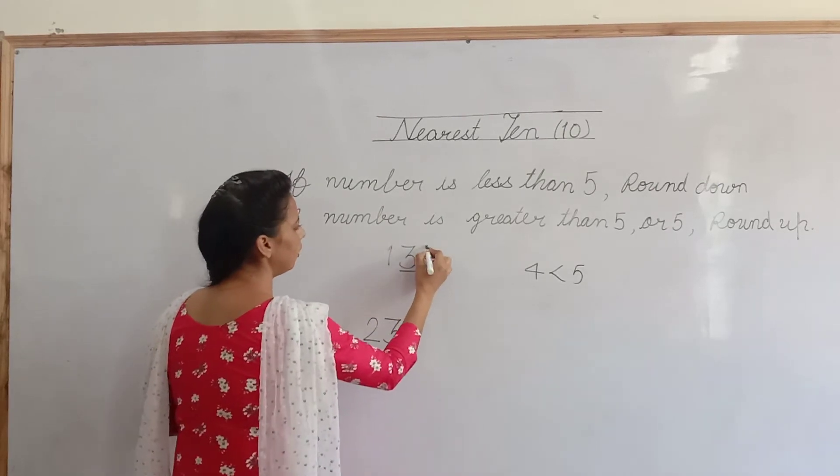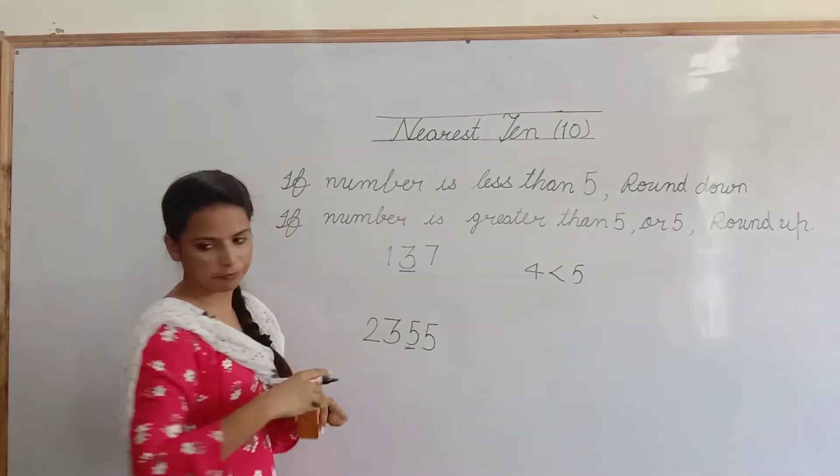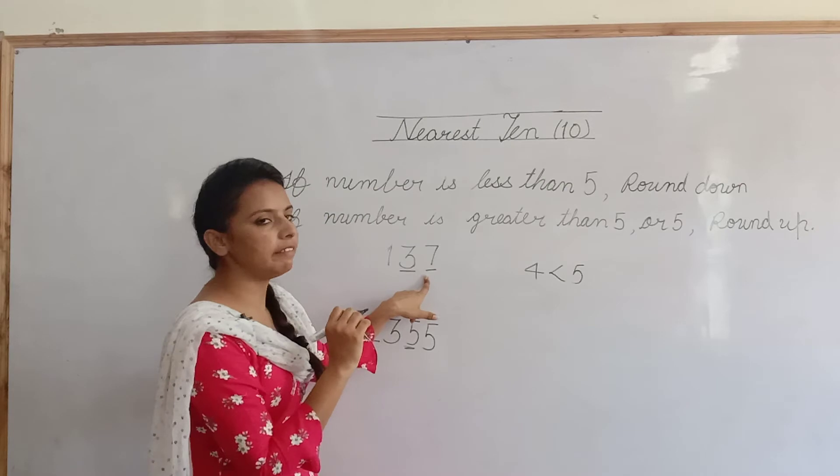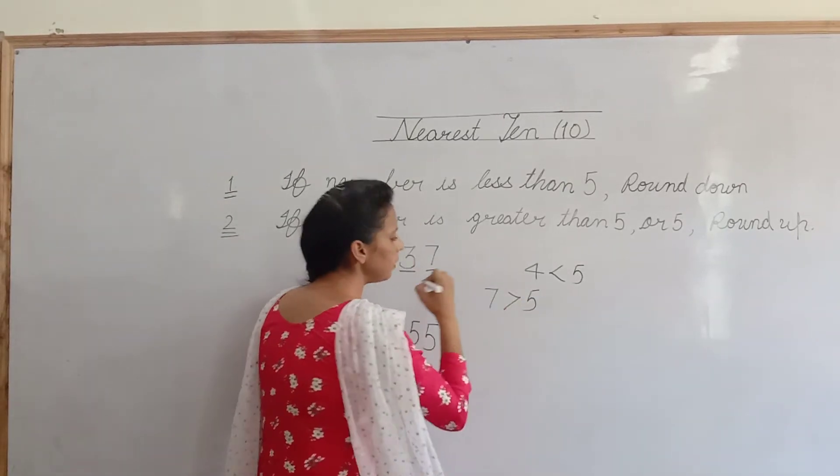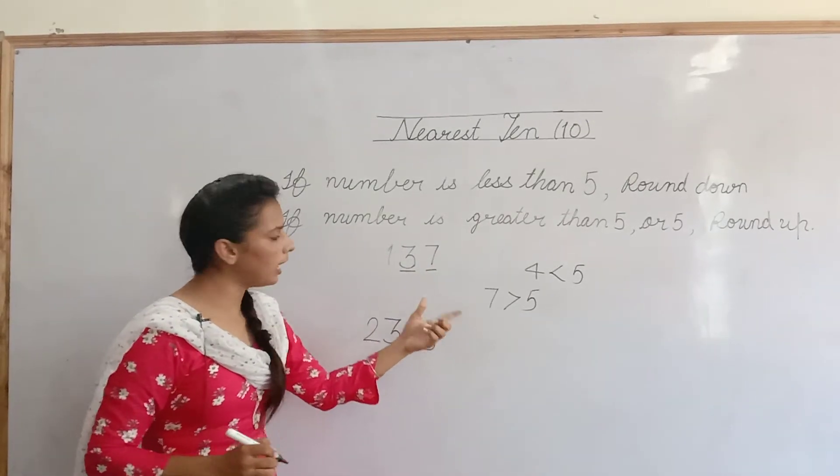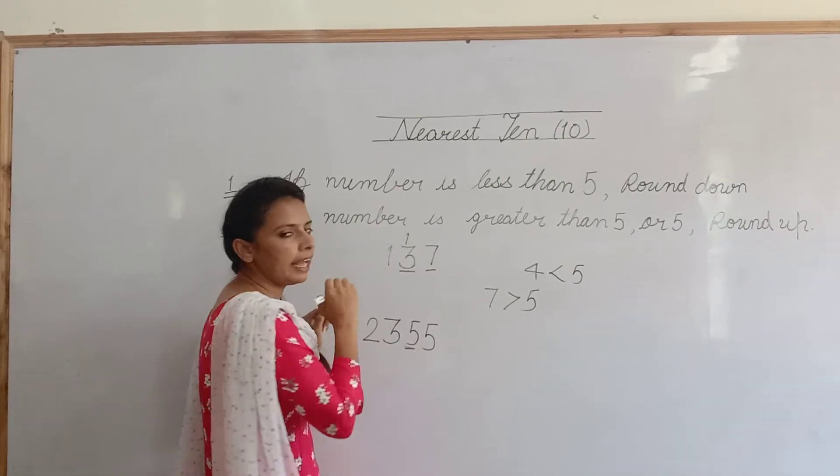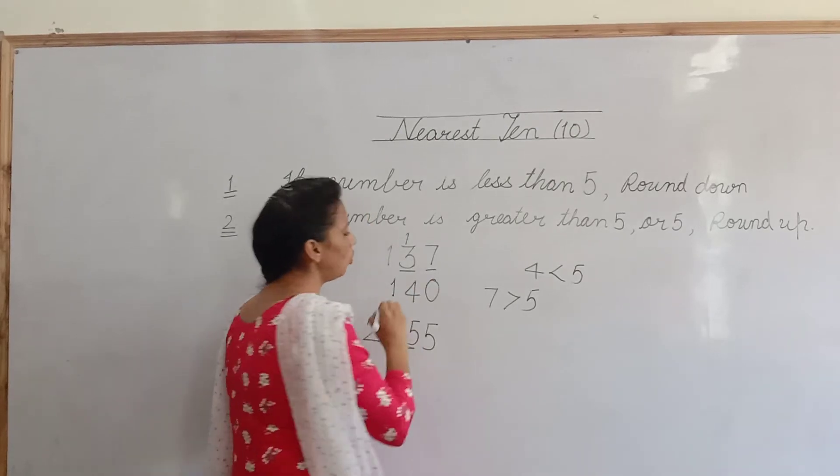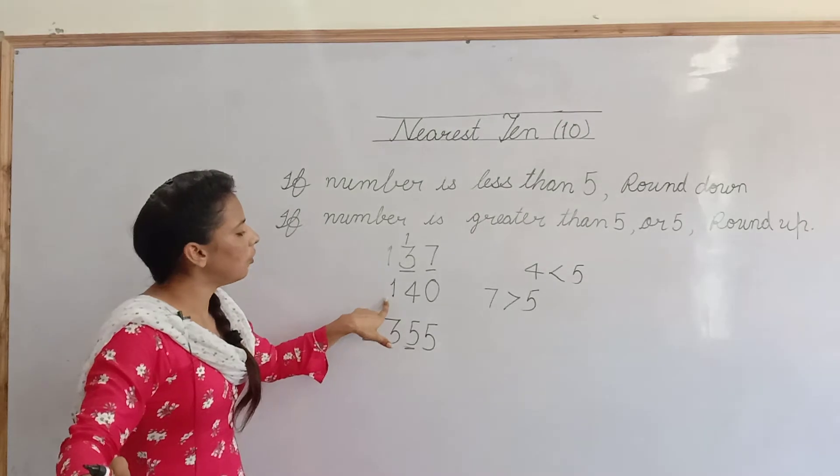لیکن اگر یہی digit ہم change کر دیں. here I have number 7 and here 5. now same method of all over again. look at 1's place 7. 7 is greater than 5 na? means 5 سے بڑھا ہے. जब 1's place वाली digit 5 سے बड़ी है. तो हमें क्या करना है? 10's place पे जो digit दी गई है. उसमें 1 क्या करना है? add करना है. then we will write here. 1, 4, and 0. now 137 का nearest 10 क्या आएगा? 140.